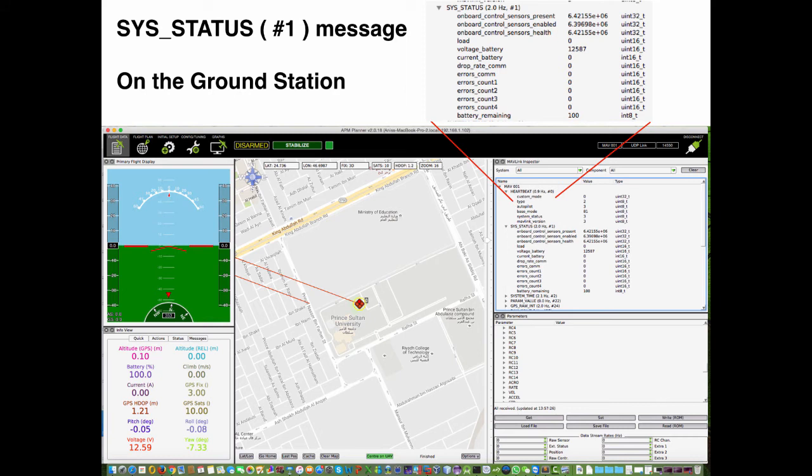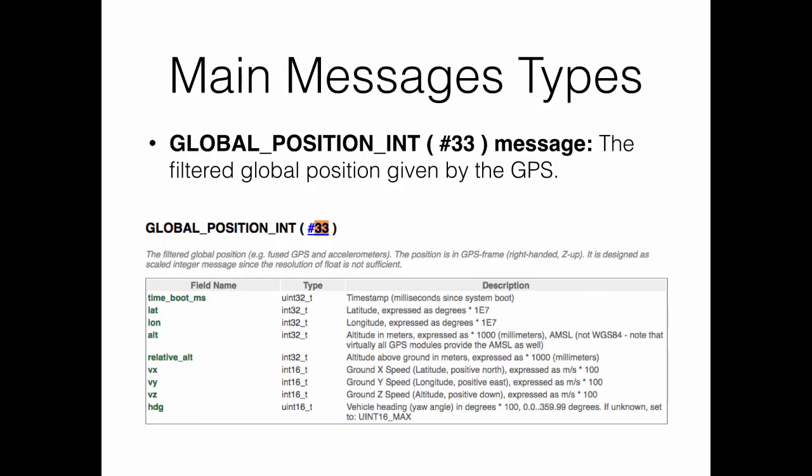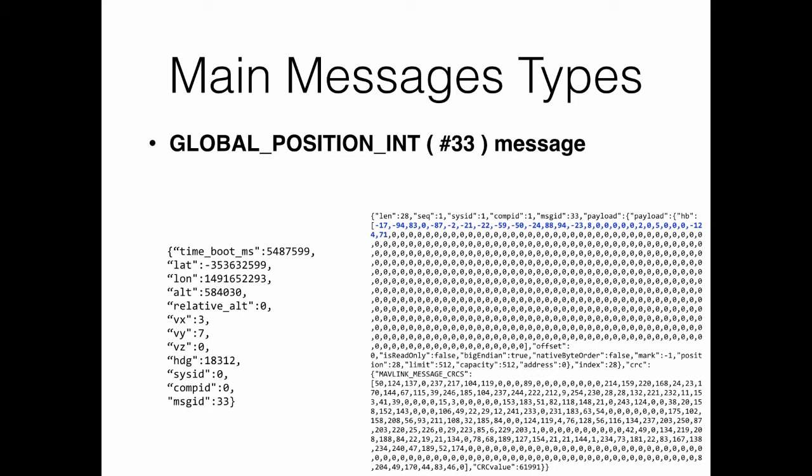The last message presented in this video is the global positioning message with ID equal to 33. It represents the filtered GPS location given by the GPS sensor. The important information carried in this message includes latitude, longitude, and altitude — all encoded into 4 bytes. Latitude and longitude values are multiplied by 10^7, and altitude is expressed in millimeters. It also provides vehicle speed along 3 axes and heading orientation. For example, latitude is -35.36, longitude is 149.16, and altitude is 58.40 meters.